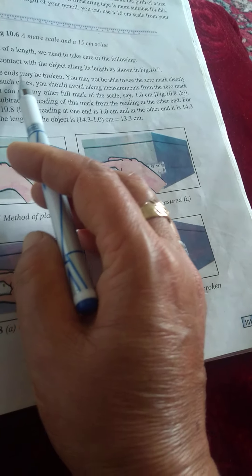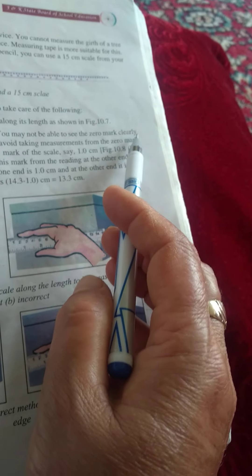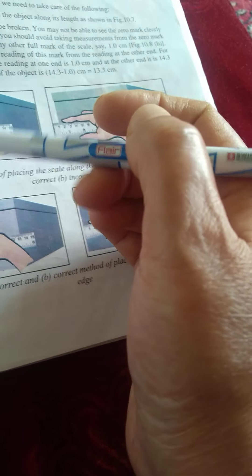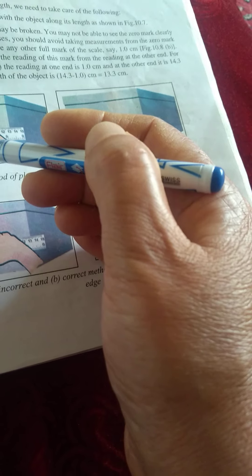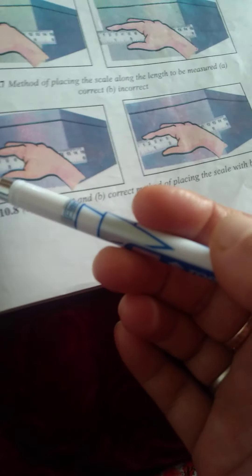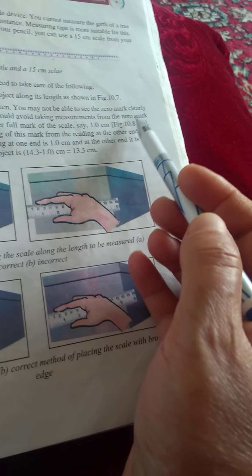In some scales, the edge may be broken. You may not be able to see the zero mark clearly. In such cases, you should avoid taking measurements from the zero mark.